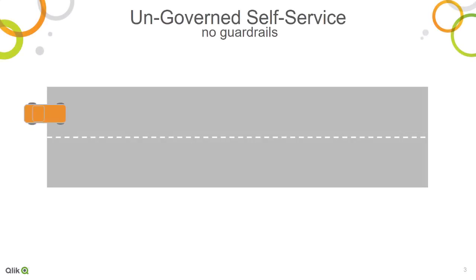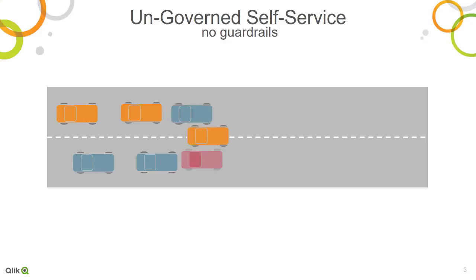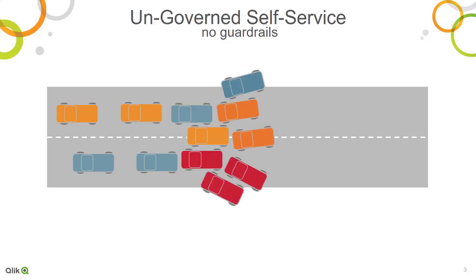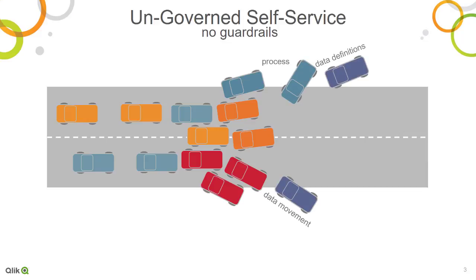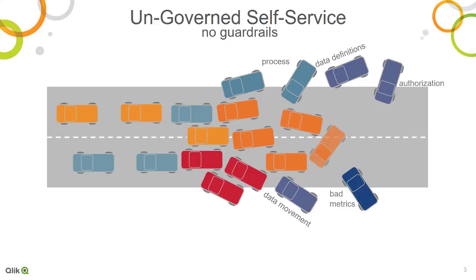In many organizations today, self-service business discovery starts off with a few key developers and analysts driving down the highway, developing applications to share with BI consumers. Then the consumers start editing apps and sharing them with more users, and the lack of guardrails steers them off course. Without guardrails to control the process, data movement, data definitions, and authorization, accidents happen rapidly and continuously impede progress in making decisions.